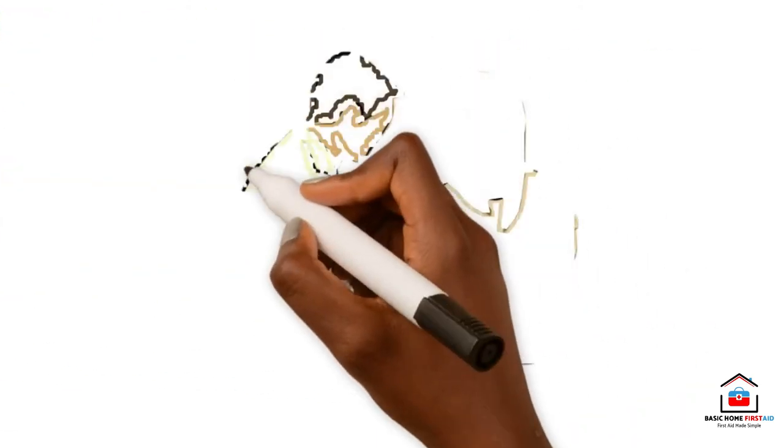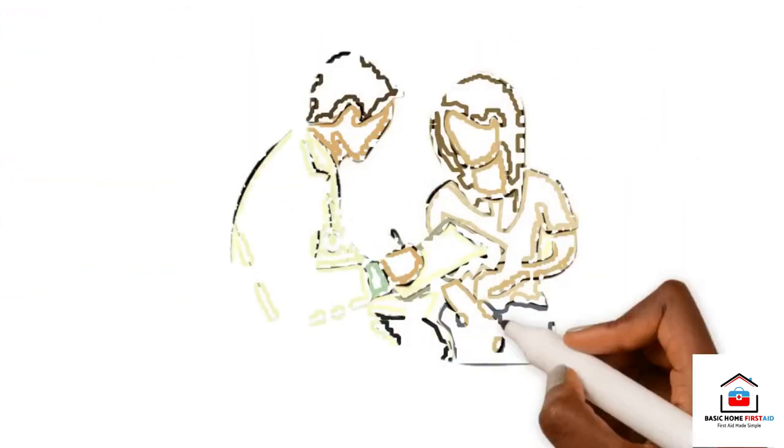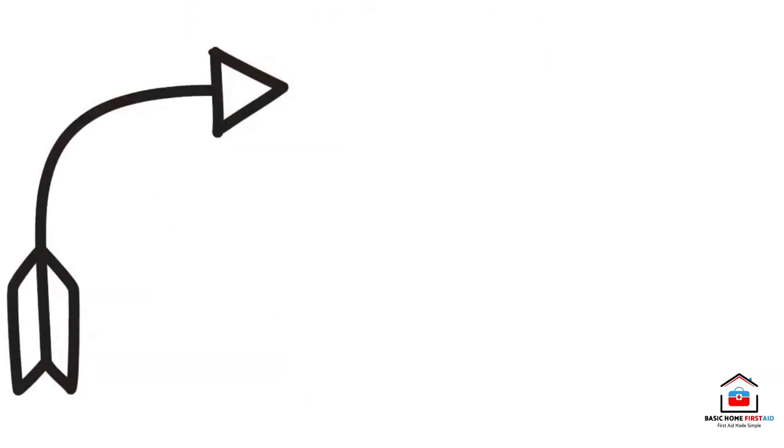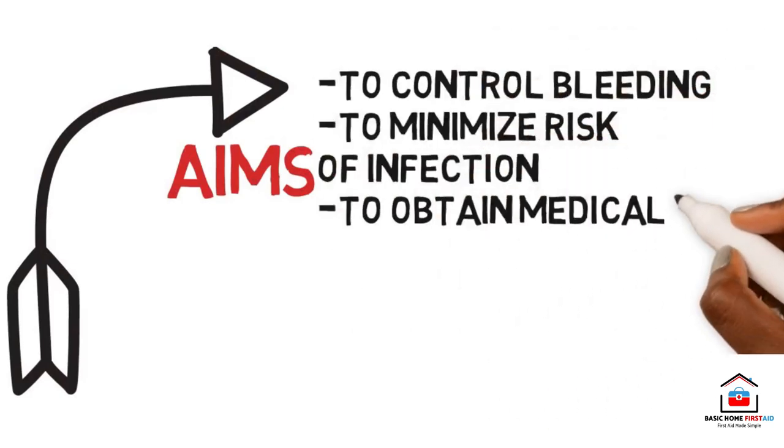As a general rule, anyone bitten by a wild or domestic animal must get professional medical attention as soon as possible. Our aims with such a casualty: first, to control the bleeding; second, to minimize the risk of infection; third, to obtain medical help if necessary.